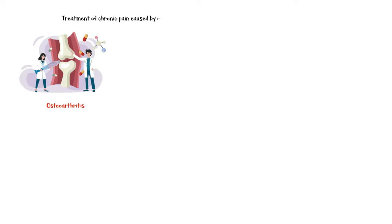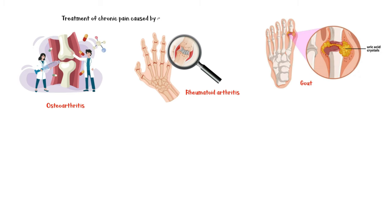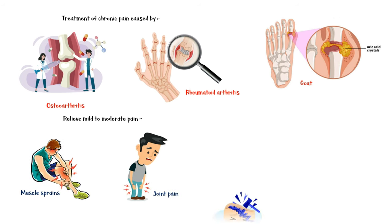Ibuprofen is commonly used in the treatment of chronic pain caused by osteoarthritis, rheumatoid arthritis, and gout. It is also given to relieve mild to moderate pain in situations like muscle sprain, joint pain, pain associated with migraine, and dental pain.